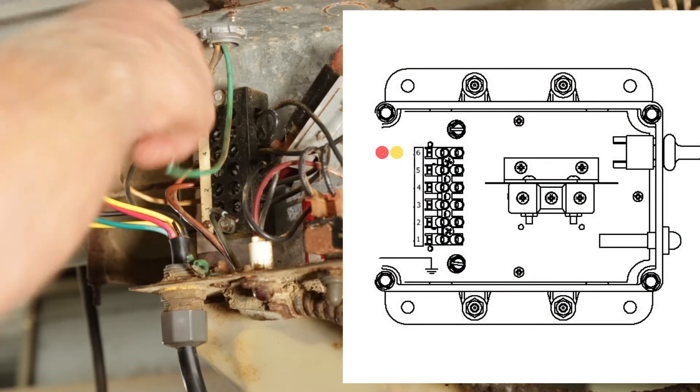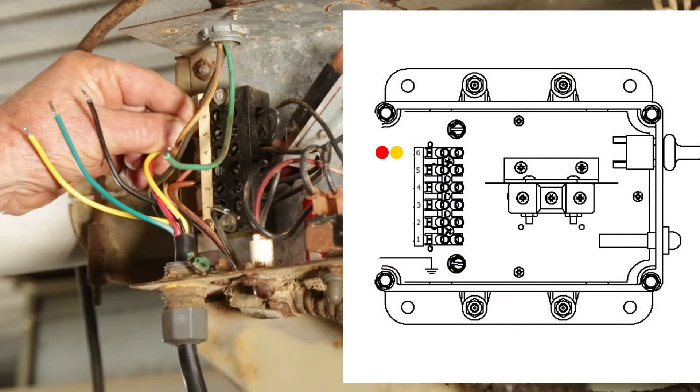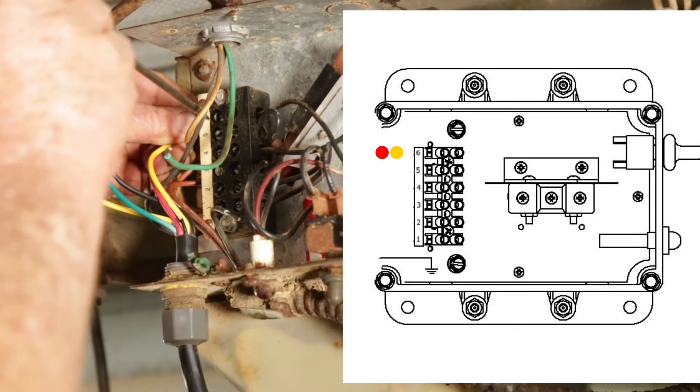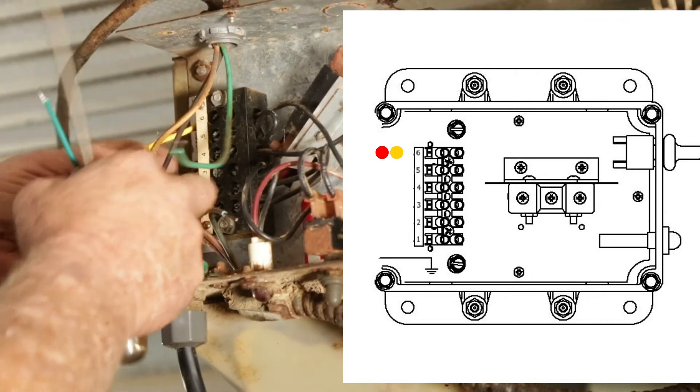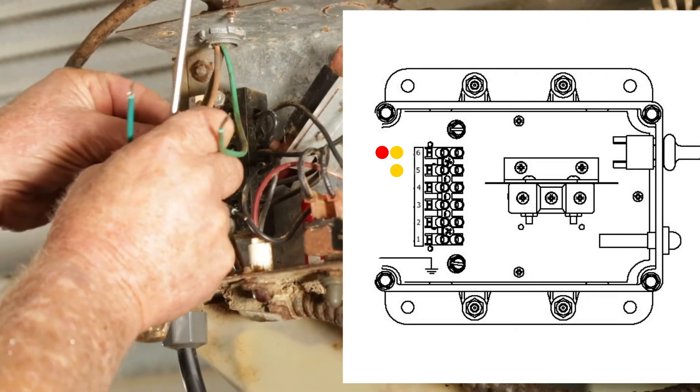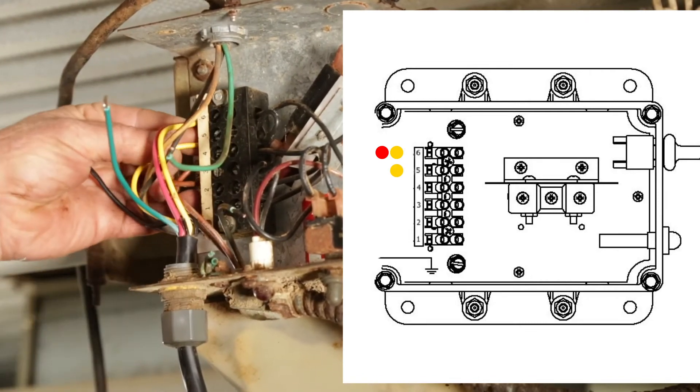Conjoin the red wire with one of the two yellow wires from the HS820 and connect them to the number 6 slot in the chore time terminal. Then connect the second yellow wire from the HS820 to the number 5 slot on the chore time terminal.